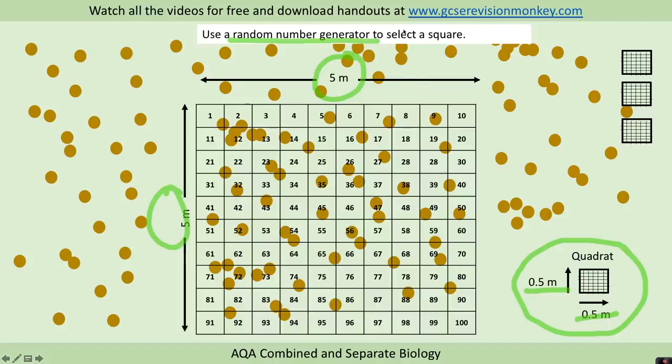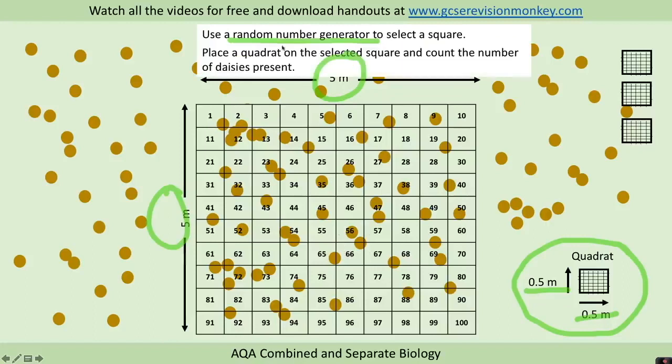And you can get those on calculators or phones, and it will pick a number at random for you. So we place a quadrat on that selected square and count the number of daisies present. And then we repeat the steps for perhaps 9 more random squares.